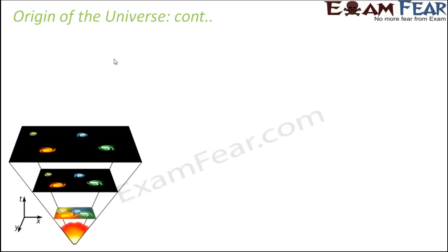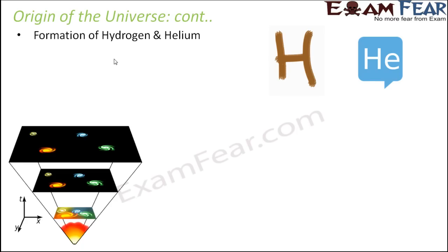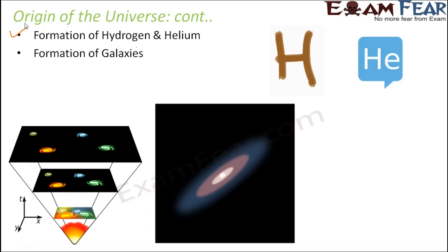Now as this process of expansion continued, there were several gases and several molecules which started forming. First of all, formation of hydrogen and helium gas took place. Then gradually galaxies were formed. These gases which were getting formed started to condense under the gravitational attraction. And as a result, these condensation of gases gave rise to the formation of galaxies. Galaxies are nothing but a collection of stars. Too many stars together formed the galaxies.